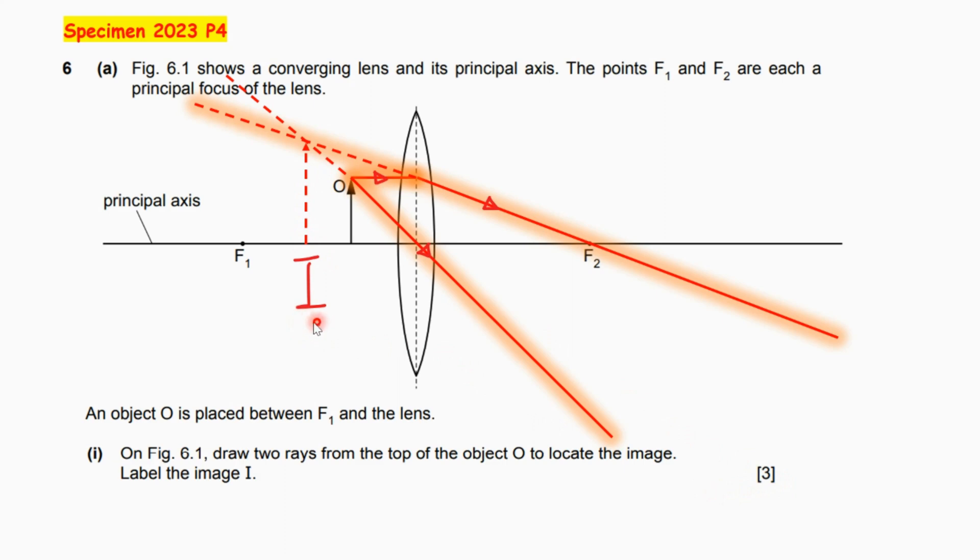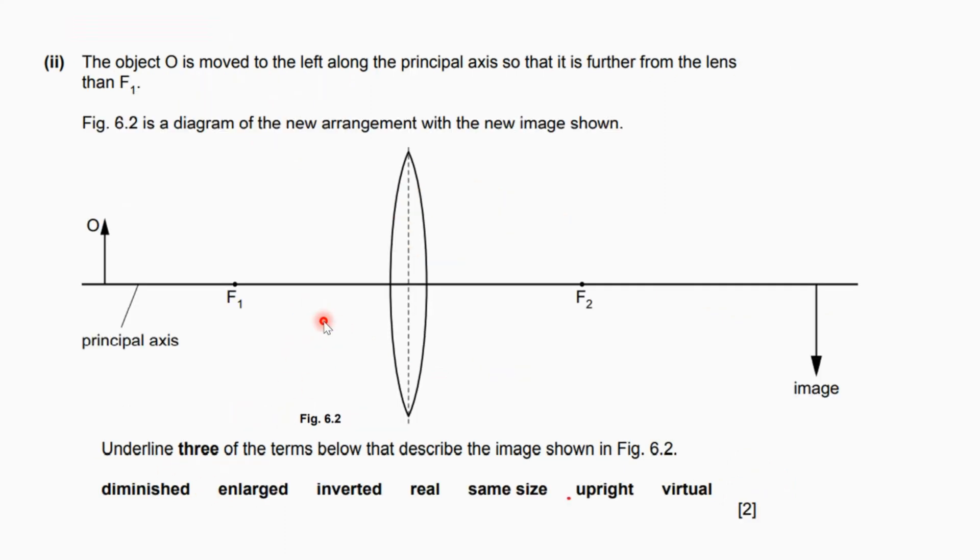In part ii, the object O is moved to the left along the principal axis so that it is further from the lens than F1. Figure 6.2 is a diagram of the new arrangement with the new image shown. Underline three of the terms below that describe the image shown in figure 6.2. This question has two marks.